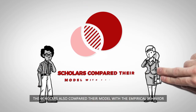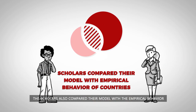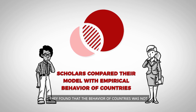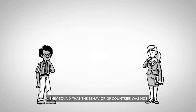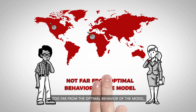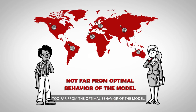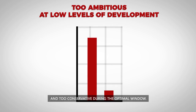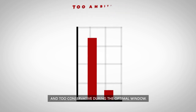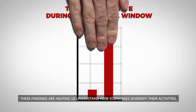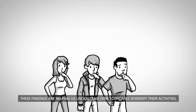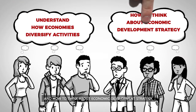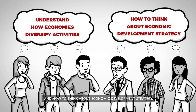The scholars also compared their model with the empirical behavior of countries in the networks of related products and related research areas. They found that the behavior of countries was not too far from the optimal behavior of the model. Yet, countries were too ambitious at low levels of development and too conservative during the optimal window. These findings are helping us understand how economies diversify their activities and how to think about economic development strategy.